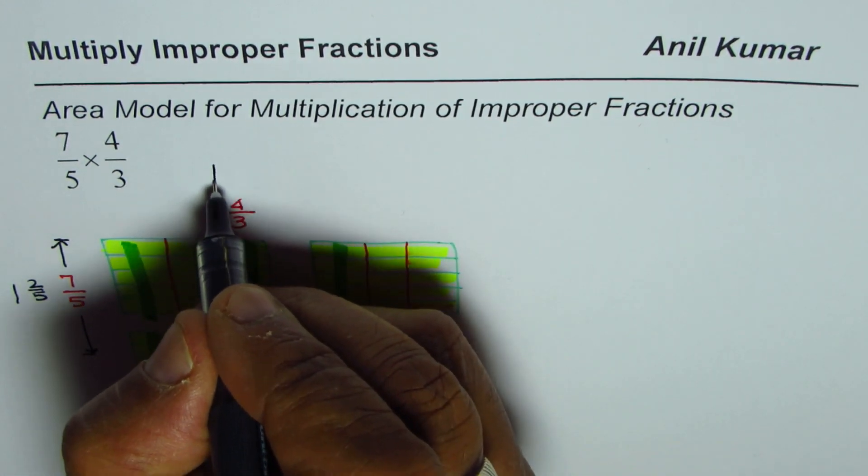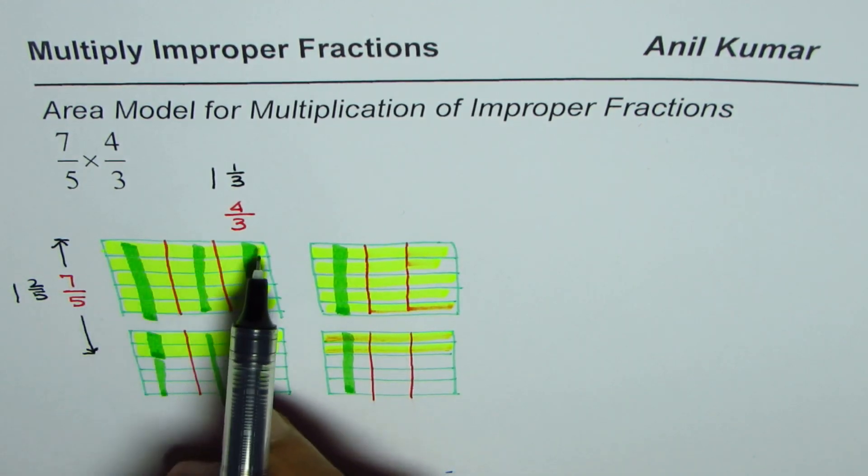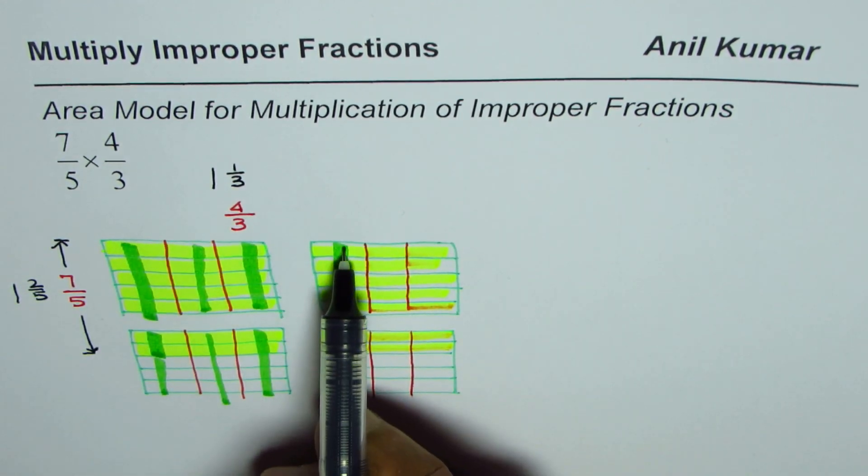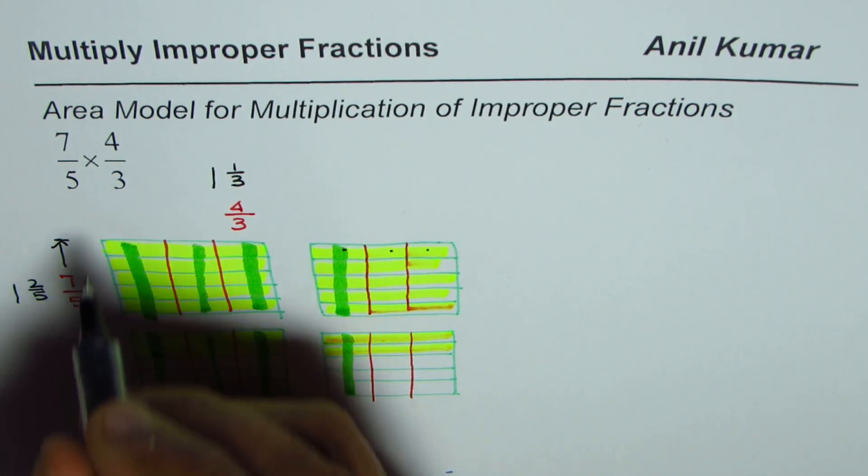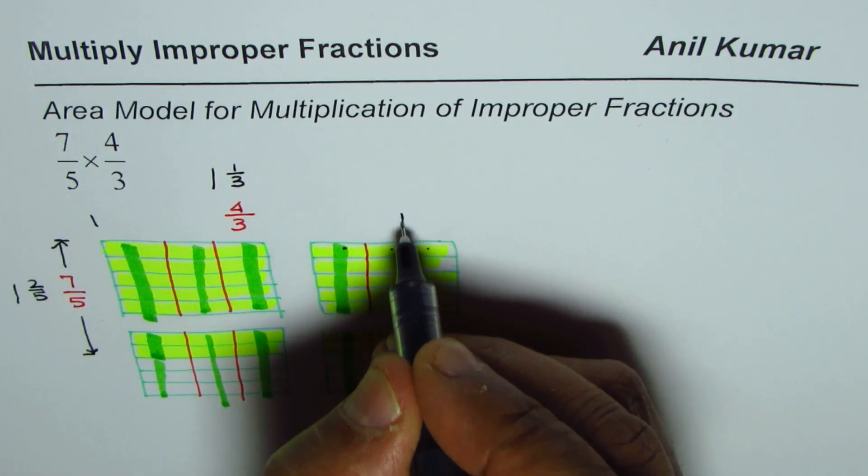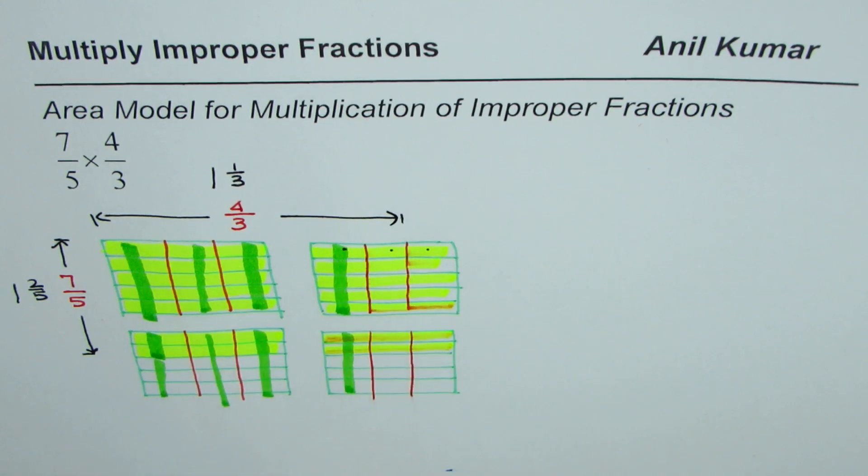4 out of 3, as you know, could also be written as 1 whole, 1 out of 3. It makes sense. 1 whole and 1 out of these 3. Does it make sense to you? So that is how it is. And I hope once you sketch like this, it makes sense to you. So this is 4 out of 3 selected.